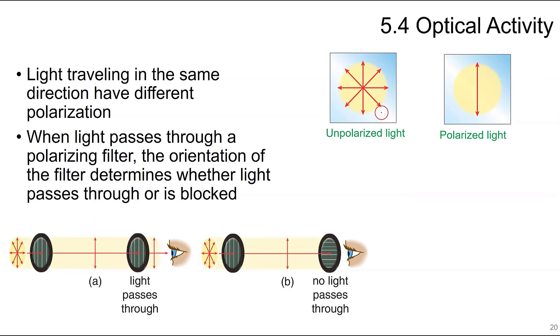If you can see the figure here, this is unpolarized light that can go in all kinds of different directions. When you have polarized light, it passes through a filter that polarizes the light. The orientation of the filter determines whether light is blocked or passes through. In this case, there's light passing through only in one direction instead of all these directions.